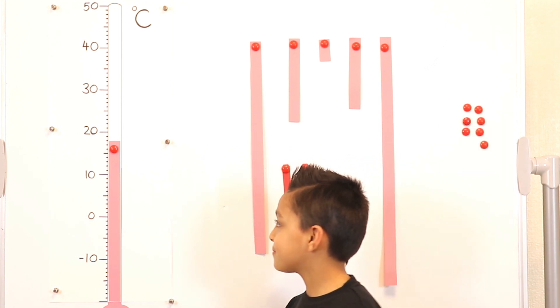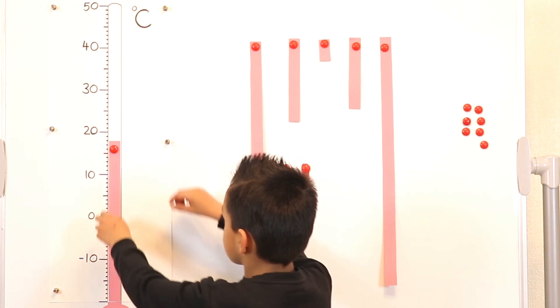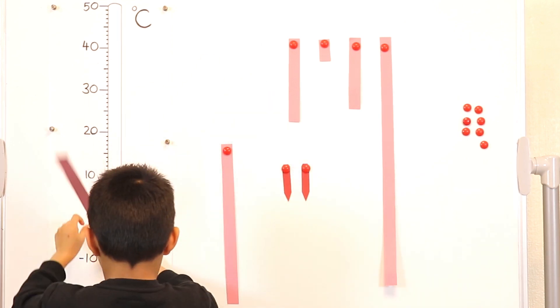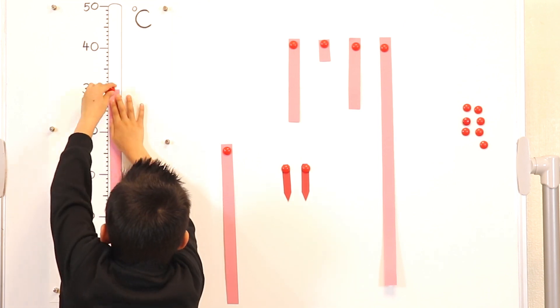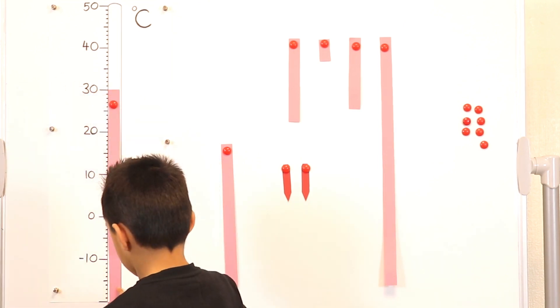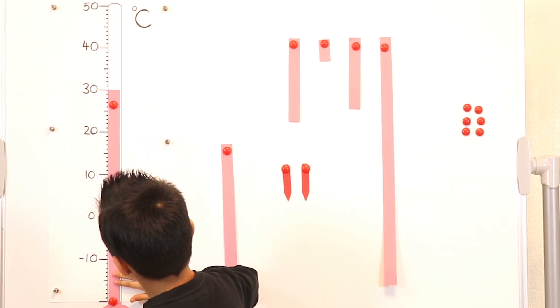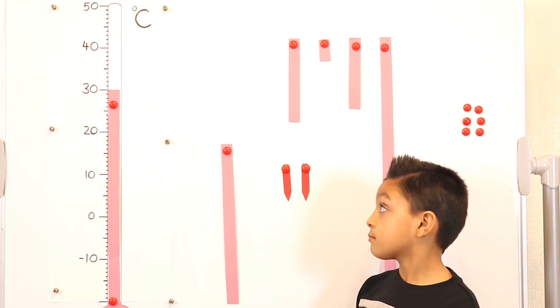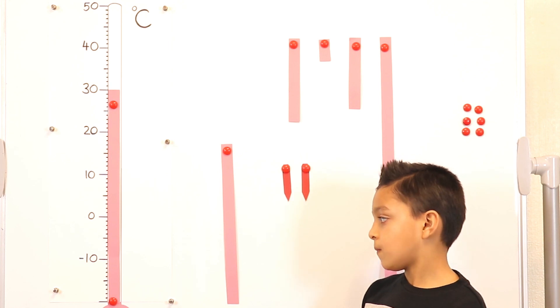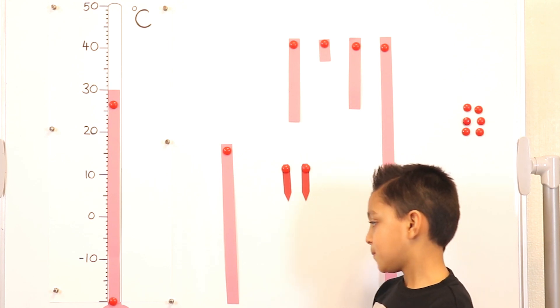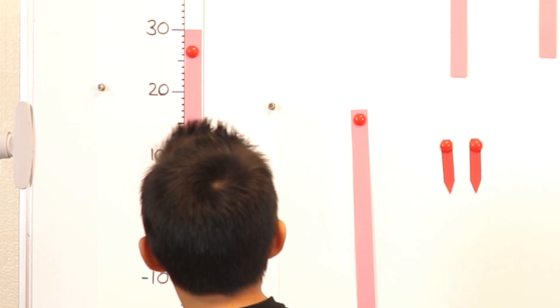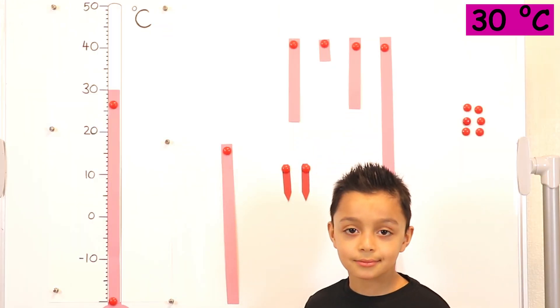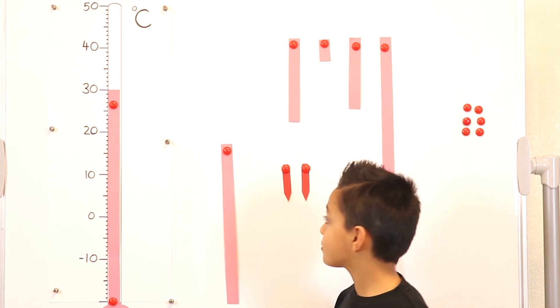So let's do the other temperature. What's the measurement on your thermometer now? Thirty degrees Celsius. Thirty degrees Celsius, that's correct.